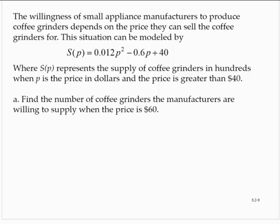The willingness of small appliance manufacturers to produce coffee grinders depends on the price they can sell the coffee grinders for. Suppose the situation can be modeled by S of p equals 0.012p squared minus 0.6p plus 40, where S of p represents the supply of coffee grinders in hundreds when p is the price in dollars and the price is greater than $40.